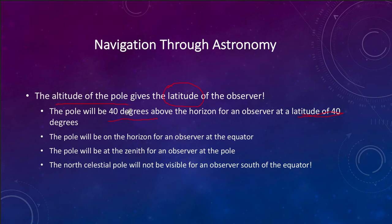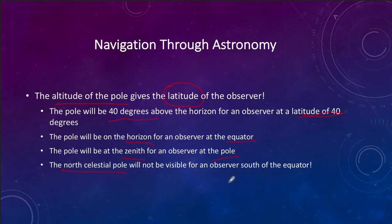The pole is 40 degrees above the horizon for a latitude of 40 degrees. It will be on the horizon if someone is at the equator, and it will be at the zenith — straight overhead — if you're at the north or south pole. This also means you cannot see certain objects. The north celestial pole is not visible when you are south of the equator. There is a south celestial pole and all of this applies to it, but the problem is there's no bright star near the south celestial pole to help with navigation in that way.